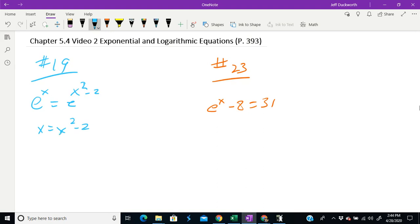And now it's just an algebra problem. So we have x squared minus x minus 2 equals 0, and we can solve that. So what do we have? x minus 2 and then x plus 1, which means that x equals 2 or x equals negative 1.